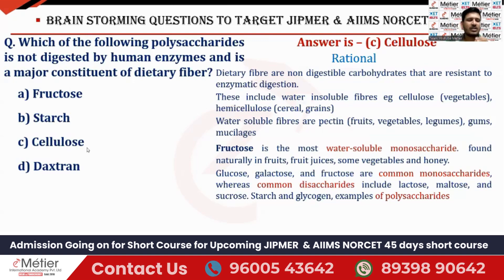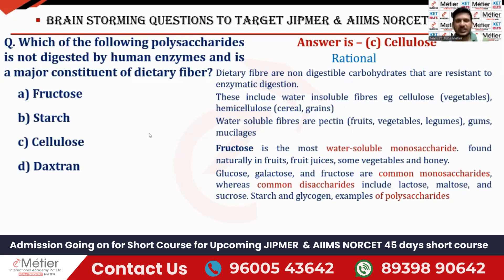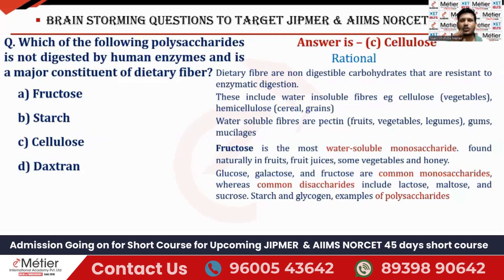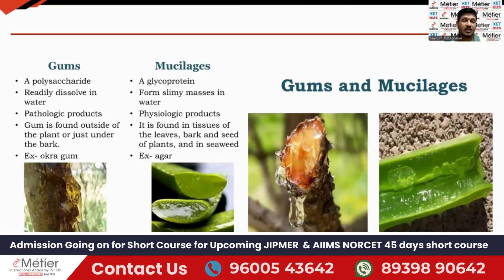The right answer for this question is option C — cellulose — because it is not digested by human enzymes. Not only cellulose, but also hemicellulose, pectin, gums, and mucilages are all correct, but only cellulose was given in the options. To understand why the other options (fructose, starch, dextran) are wrong, you need to know about monosaccharides, disaccharides, and polysaccharides.